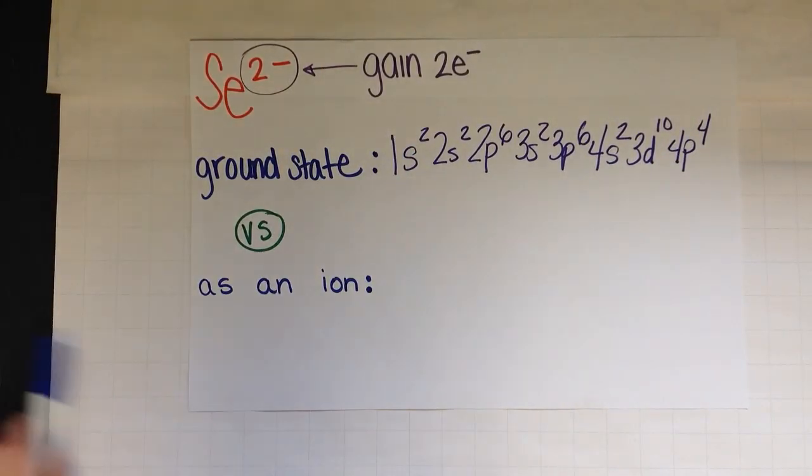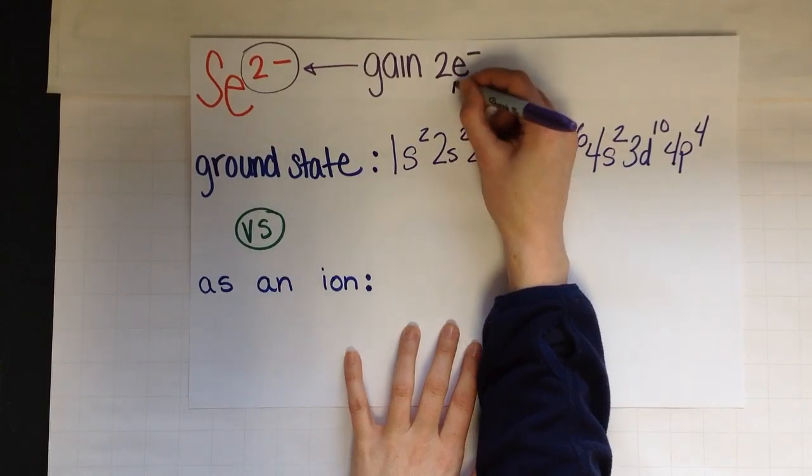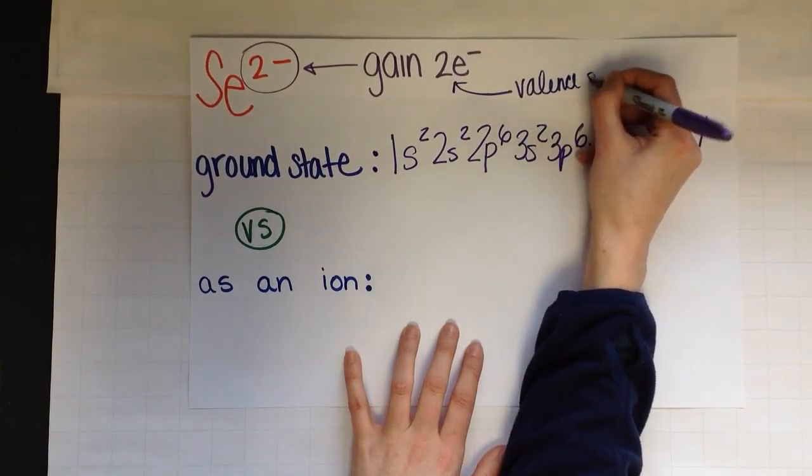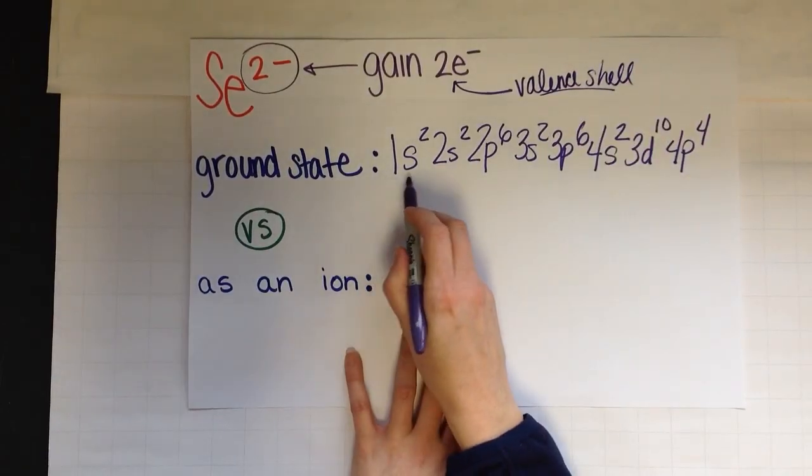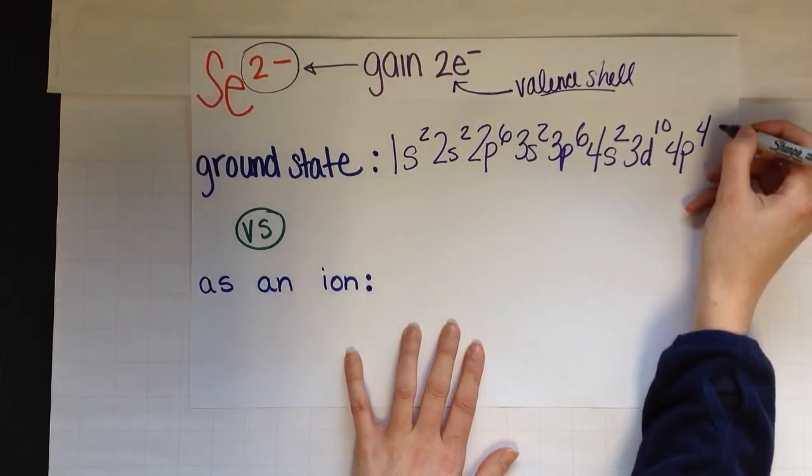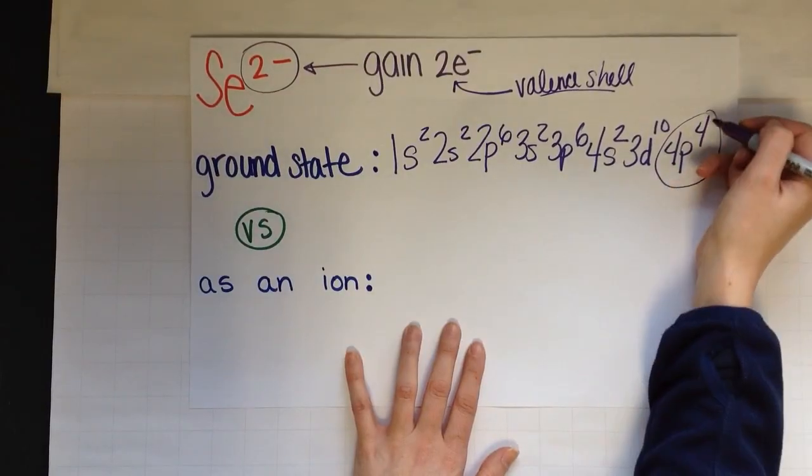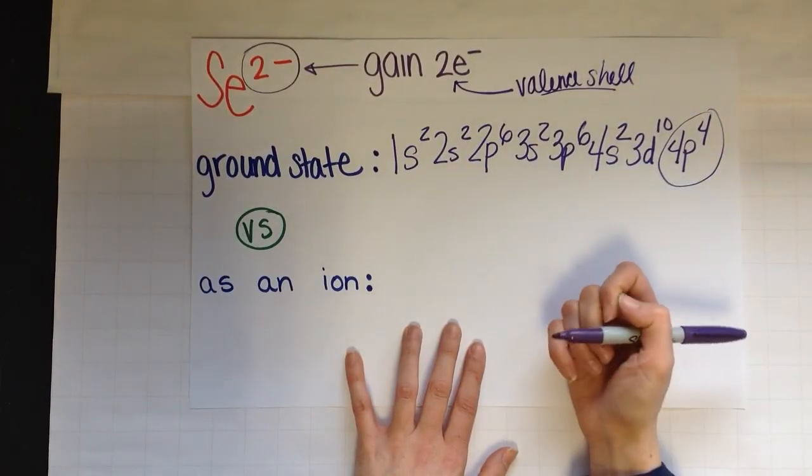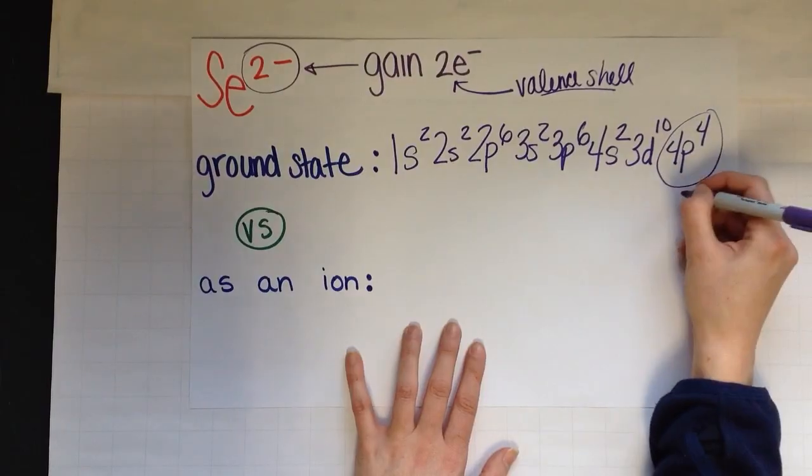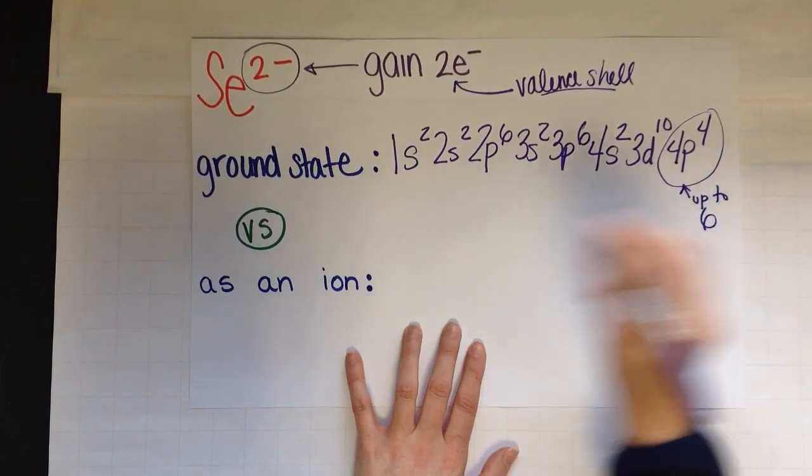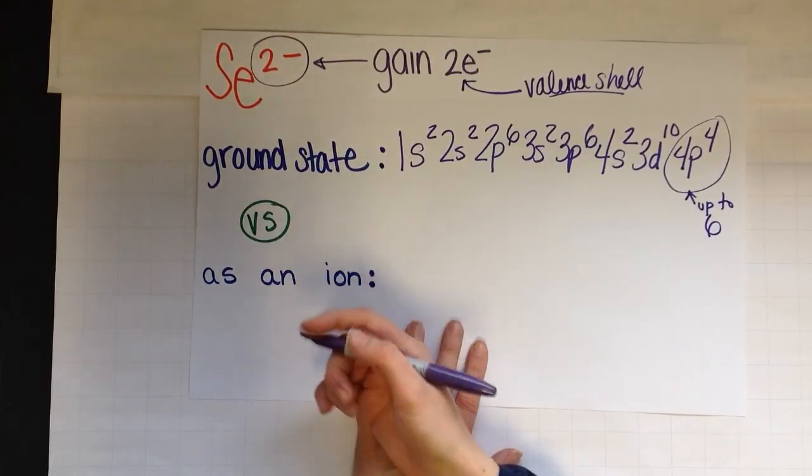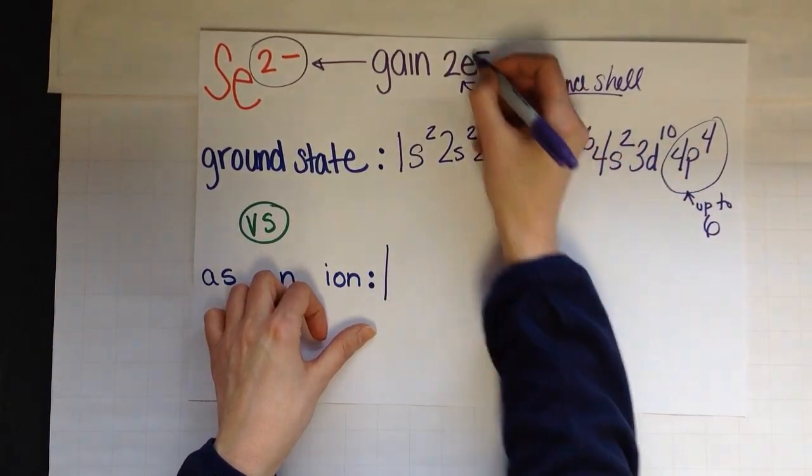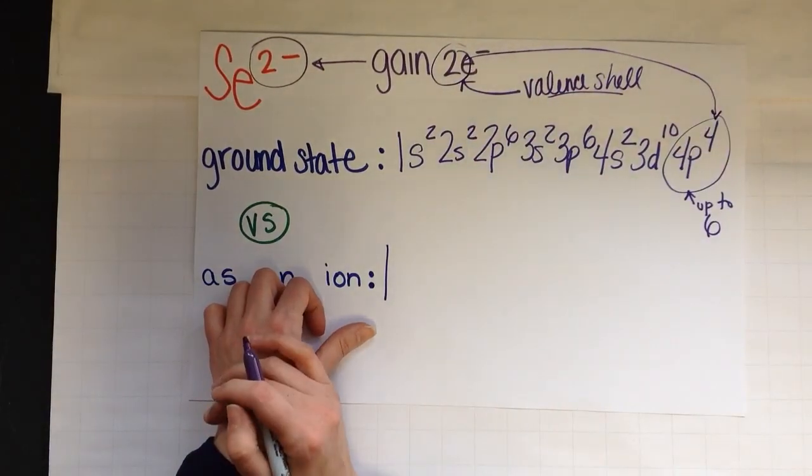But now if you remember, we said that you gain two electrons. Remember, you can only gain and lose electrons in your valence shell, which is the outermost. So I find my outermost and that is my 4p4. Good, 4p4 is going to be my outermost, 4th is the highest energy level, p is higher than s. And remember, p can hold up to six electrons. So is there room for more? Yes, there is.